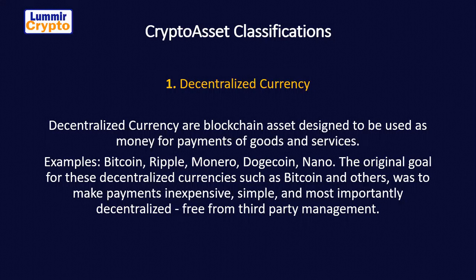That is the first classification of crypto assets — decentralized currency — and Bitcoin is included. The full goal of these assets is to serve as payment for goods and services. You don't need your neighbor to buy and sell. For example, if I have goods to sell, I could say I want payment in Bitcoin — you just go buy Bitcoin and send it to me. Bitcoin serves as the means of payment for goods.